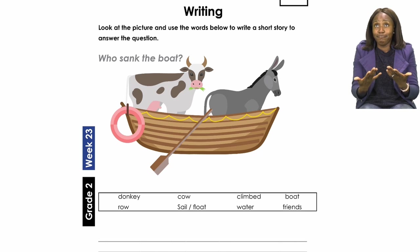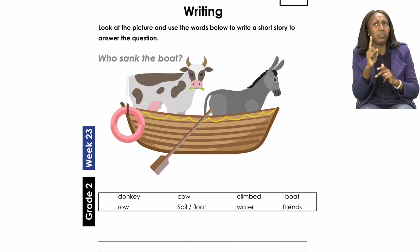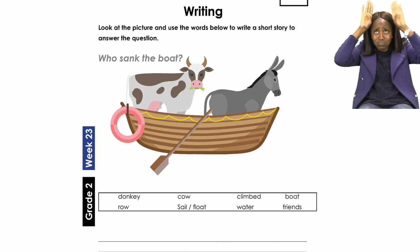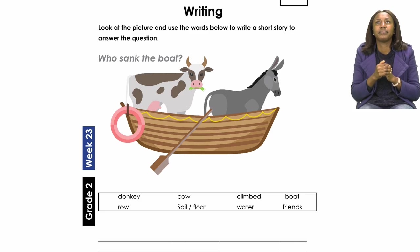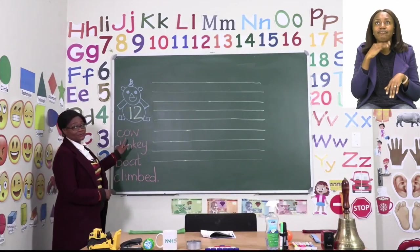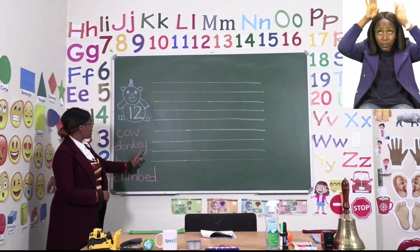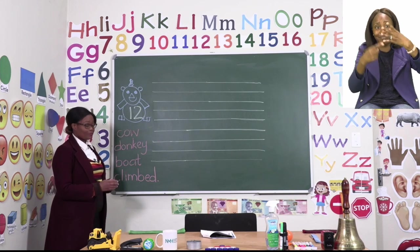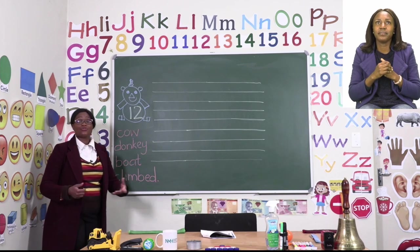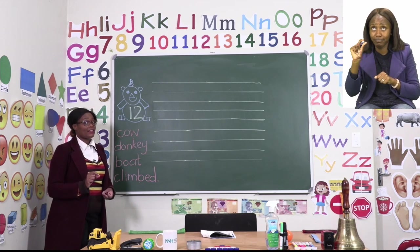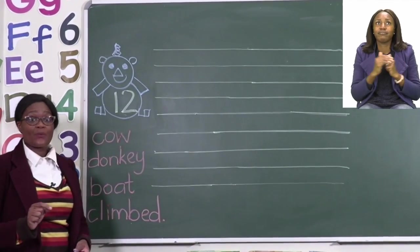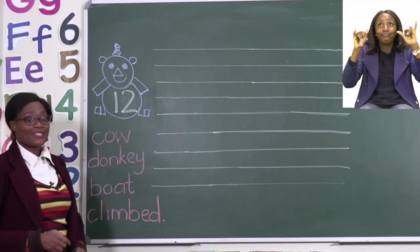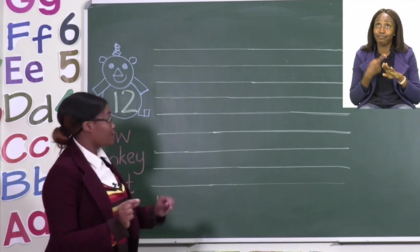We need to write a short story about what happened, or who sank the boat. Let's try and use some of the words to start our story. The words that are going to help us are: cow, donkey, boat, and climbed. We're going to use these to begin. The first sentence is your introduction sentence — that's the one that's going to open the story. So we can say: 'There was once a cow and a donkey.' We start with a capital letter T for the word 'there.'